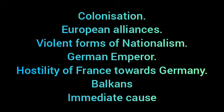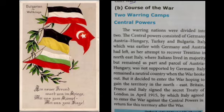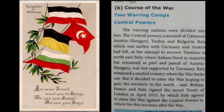Course of the First World War. First of all, the warring nations were divided into two: the Central Powers and the Allied Powers. In the Central Powers: Germany, Austria-Hungary, Turkey, and Bulgaria.